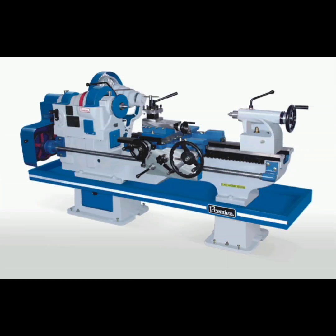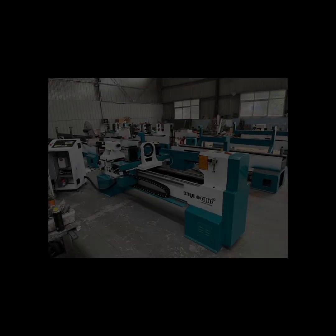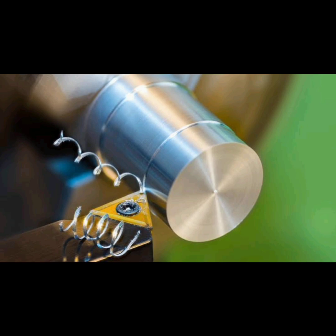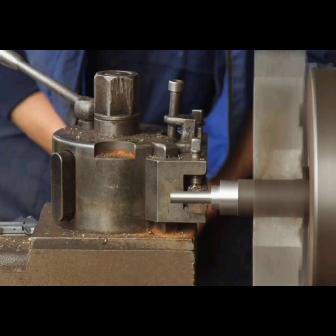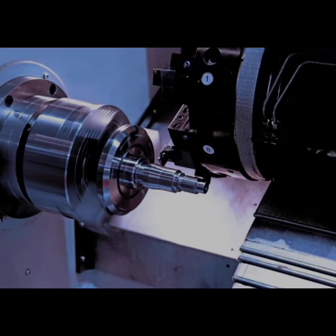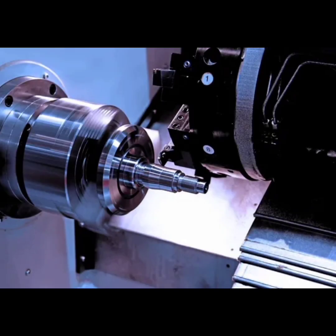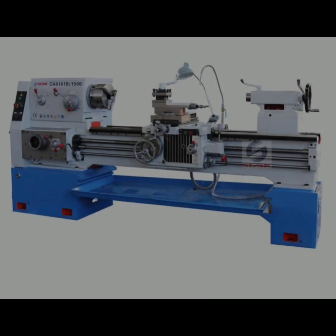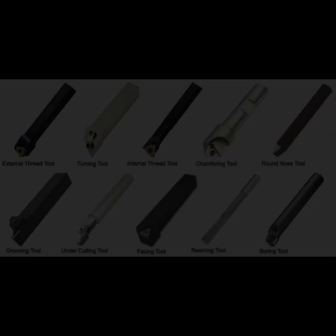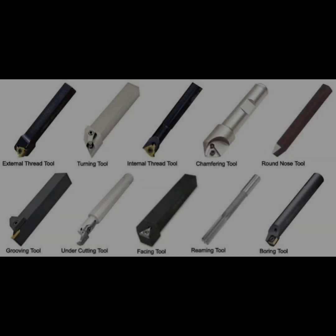What is a lathe machine? A lathe machine is a powerful machine tool used for shaping, cutting, drilling, knurling, and finishing materials, usually metal or wood. It works on the principle of rotating the workpiece against a stationary cutting tool. It's often called the mother of all machines because it's one of the oldest and most important machine tools in manufacturing.